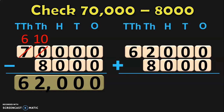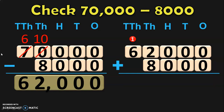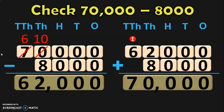Now do the checking operation by adding 62,000 plus the smaller number 8,000. Begin the addition from the ones place: 0 plus 0 is 0. In tens place: 0 plus 0 is 0. In hundreds place: 0 plus 0 is 0. In thousands place: 2 plus 8 gives you 10; retain the 0 and carry 1 to the ten thousands place. In ten thousands place, adding the carry gives you 7. So the answer is 70,000, confirming the subtraction operation is correct.